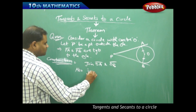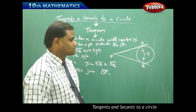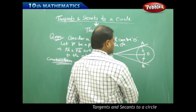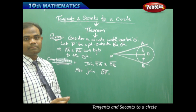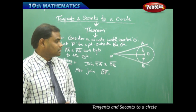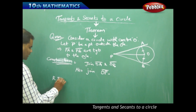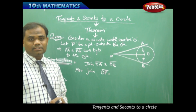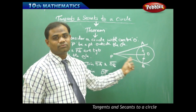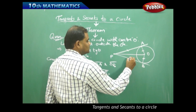We also join OP, as this helps in the further proof. Now using geometrical properties, we need to prove that PA is equal to PB. Since PA and PB are tangents from external point P to the circle with center O, the required to prove is PA = PB.